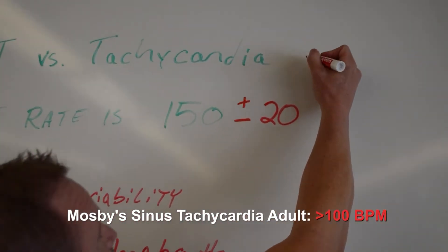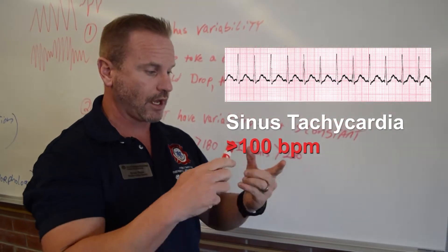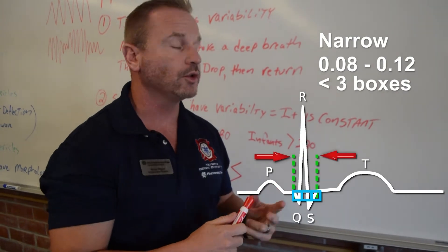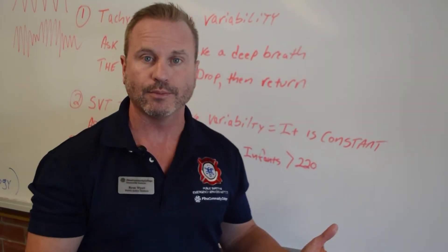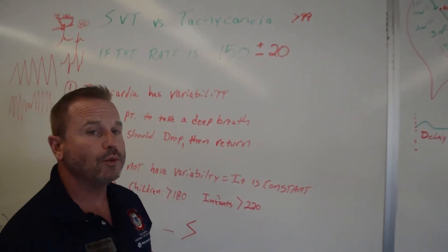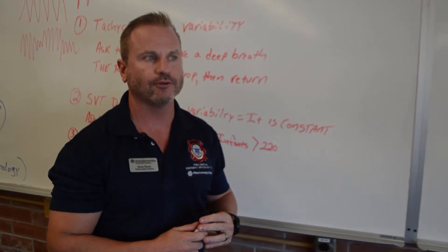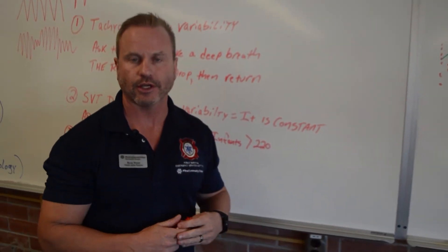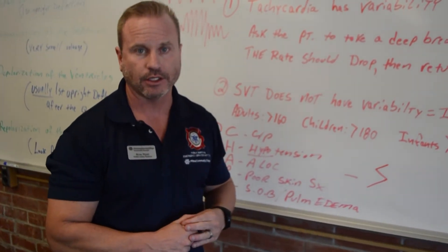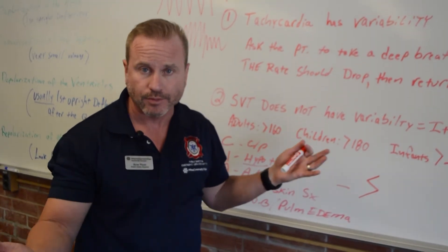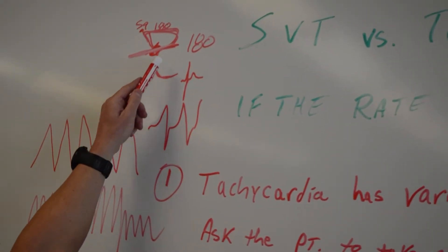Sinus tachycardia is any rate over 99 beats per minute. It is a narrow complex, meaning it originates in the atria — a normal sinus process with a P wave and a narrow QRS under three boxes, or 0.12. It's very benign in itself. We see sinus tachycardia from jumping jacks, running, or drinking a lot of energy drinks. Normally we don't treat this; it's very rarely symptomatic. Only when it gets around 150 may the patient feel lightheaded or notice a fluttering in their chest.